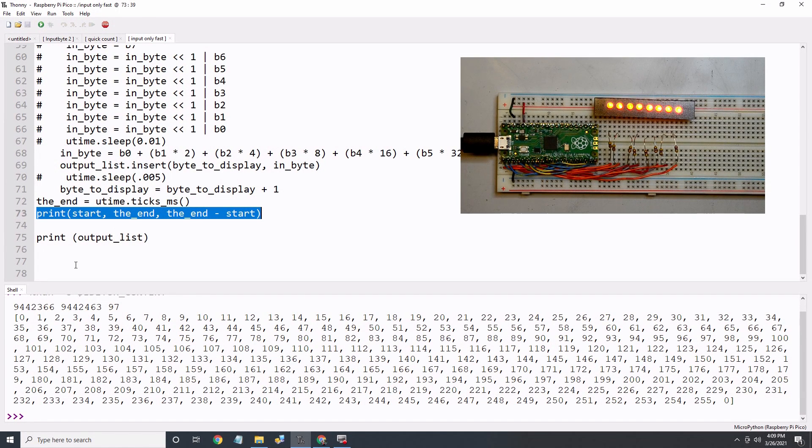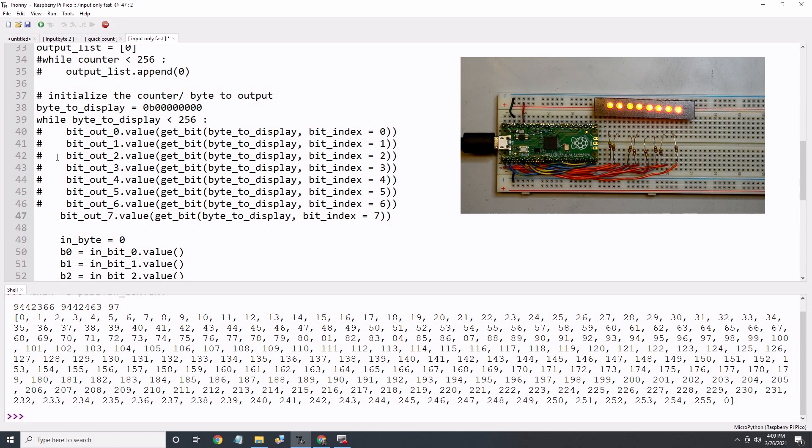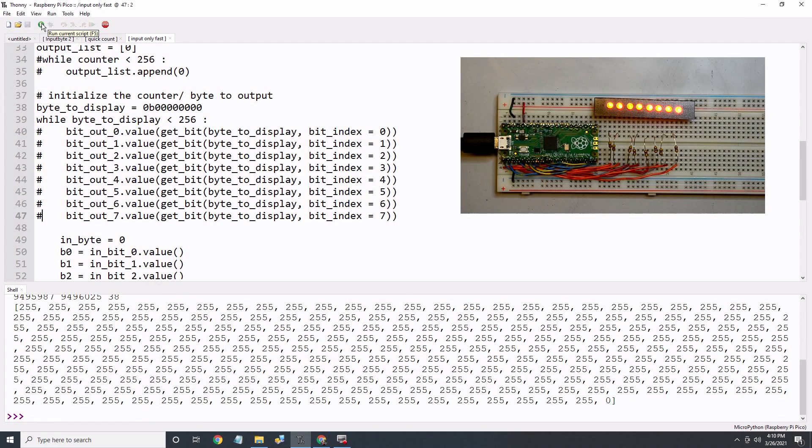It took 97 milliseconds to generate, output, read, and then store 256 bytes of data. This translates to approximately 2,600 bytes per second. When I removed the byte output section of the code, inputting 256 bytes only took 38 milliseconds, yielding an input rate of 6,700 bytes per second.